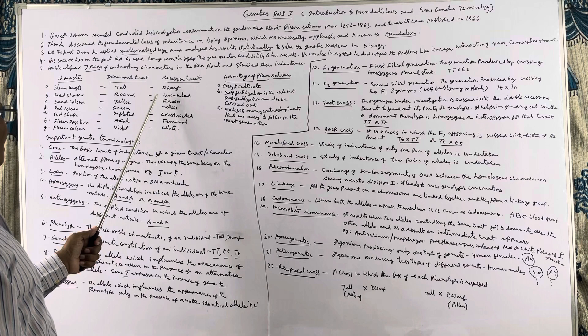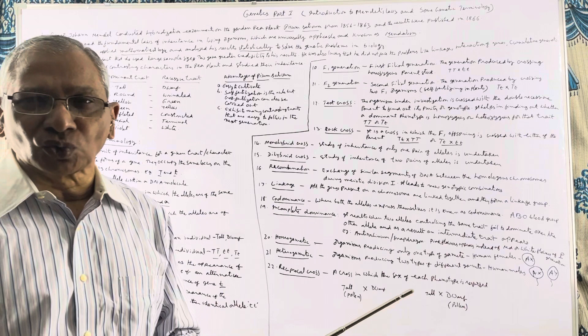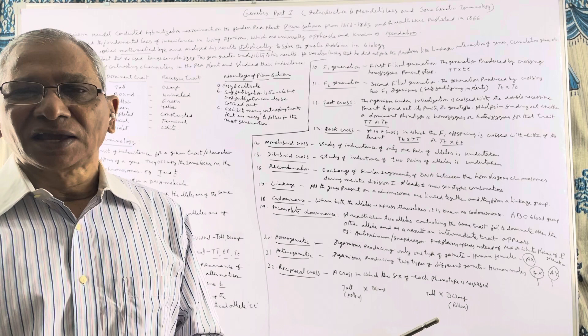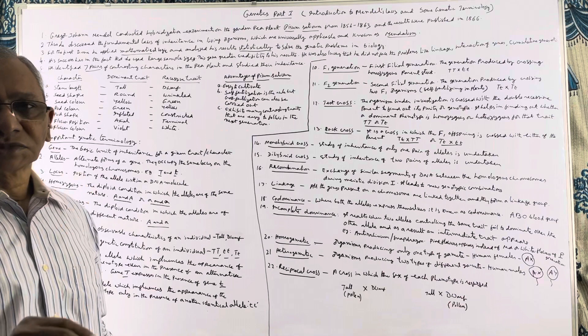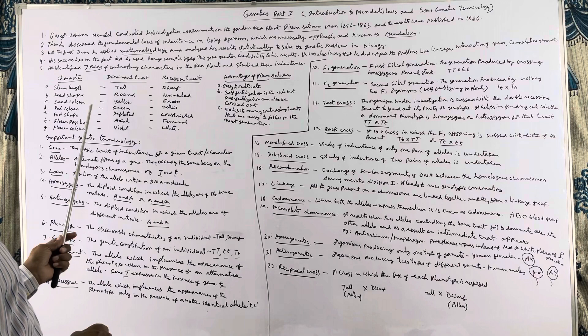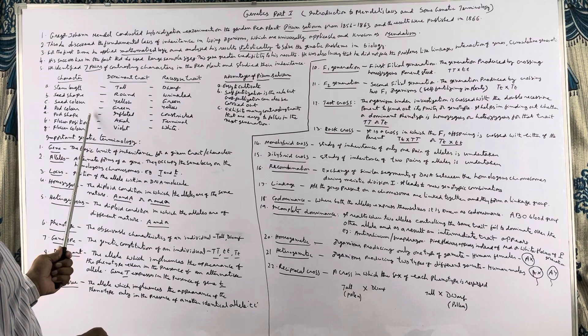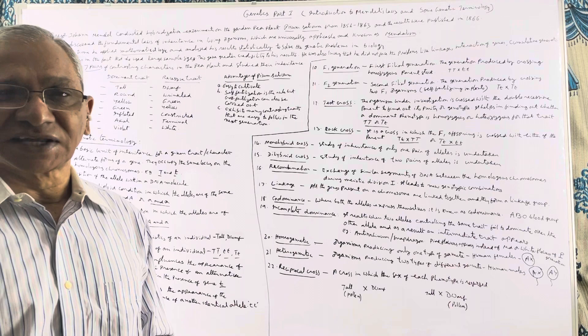The seven pairs are: stem length — long or short (tall or dwarf); seed shape — round or wrinkled; seed color — yellow or green; pod color — green or yellow; pod shape — inflated or constricted; flower position — axial or terminal; flower color — violet or white. In this way he selected seven pairs of contrasting characters.